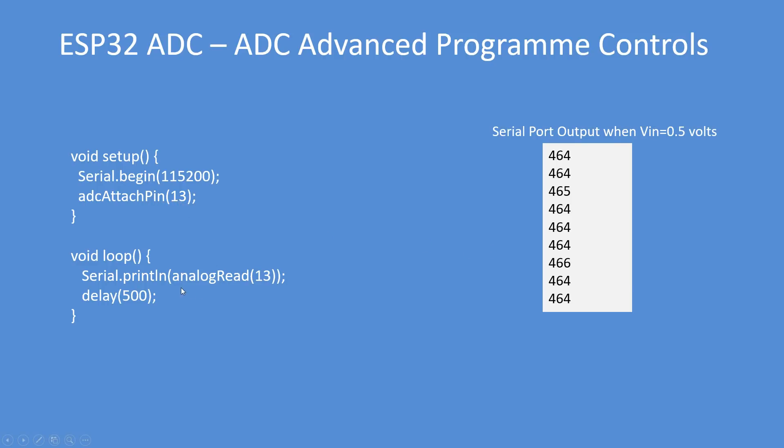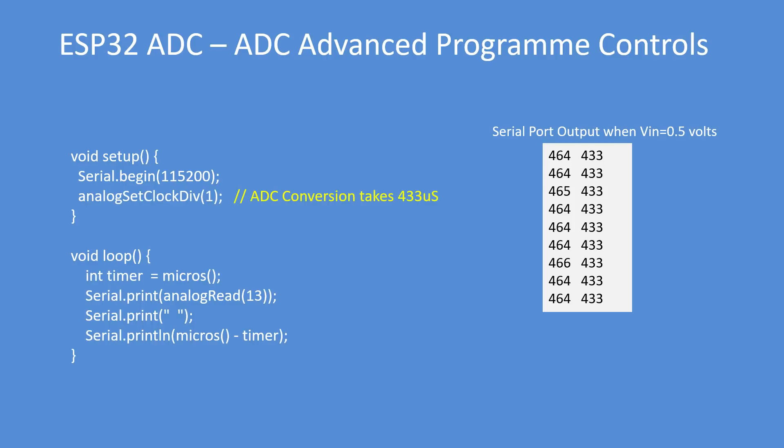Here's an example of attaching the ADC channel to pin 13, reading that pin and getting the same result. Here's an example of setting the clock speed, so that's its default value anyway. And discounting the serial print statements, it takes approximately 400 microseconds to make the conversion.